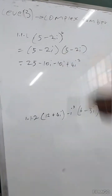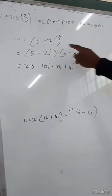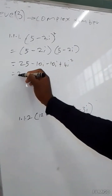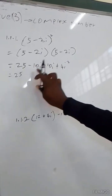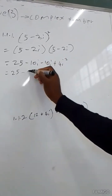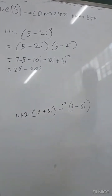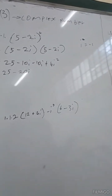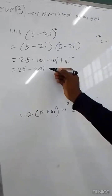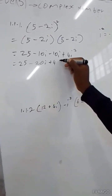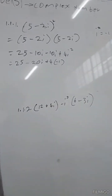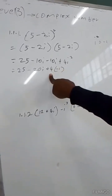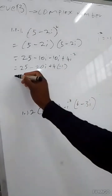Because i times i equals i squared — we add the exponents. So the following step equals 25 minus 10i minus 10i, which equals negative 20i. Then i squared equals negative 1, so here we will have plus 4 times negative 1.